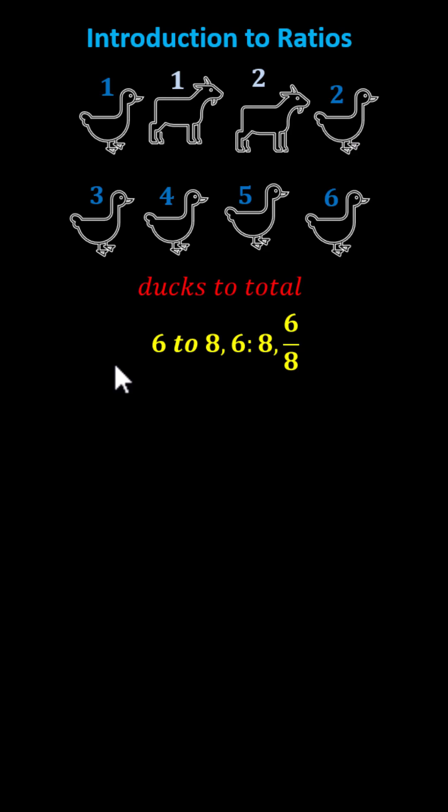Once again, we can simplify because six and eight share a common factor of two. Dividing both six and eight by two, we have the simplified ratio of three to four. I hope you found this helpful.